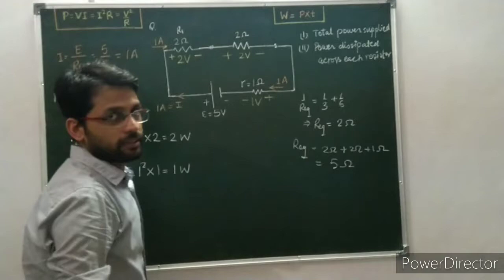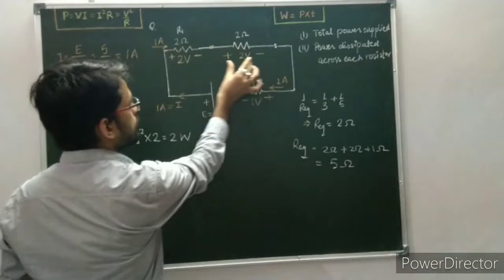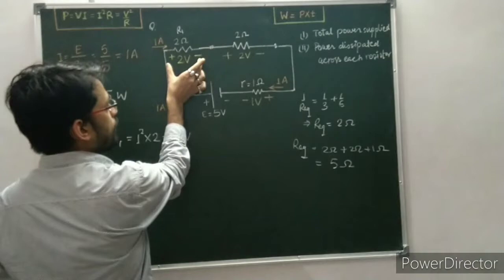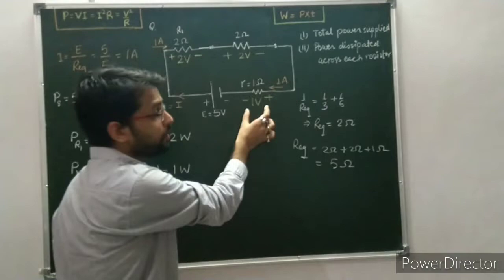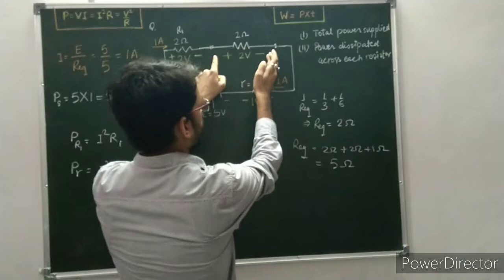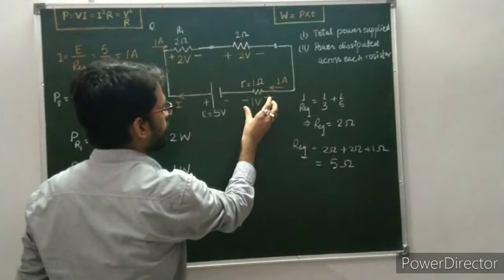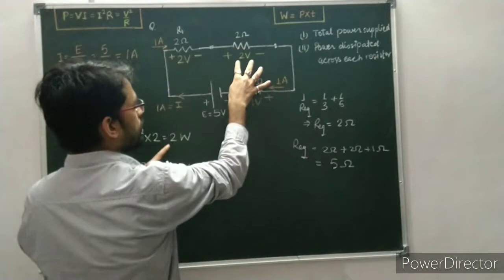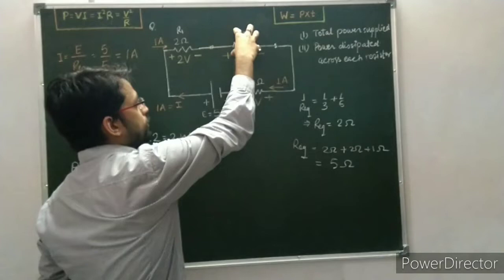The supply voltage is 5 volt, and the sum of distributed voltages must equal the applied voltage. We have calculated 2 volt across R1 and 1 volt across internal resistance, so the remaining 2 volt must appear across the parallel combination. That remaining potential difference is 2 volt.